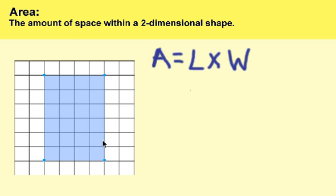So we got 1, 2, 3, 4, 5, 6. So that's our length. Our length is 6 times our width, which is going to be 1, 2, 3, 4. So 6 times 4 is equal to 24.